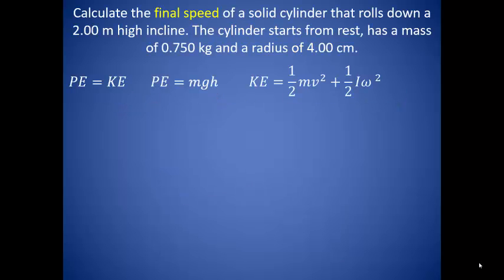So let's calculate the final speed of a solid cylinder that rolls down a 2 meter high incline. The cylinder starts from rest, has a mass of 0.750 kilograms and a radius of 4 centimeters. So here is what we know. Potential energy is equal to the total final kinetic energy. We also know how to find gravitational potential energy. And the total kinetic energy is the rotational and linear kinetic energies added together. So these two expressions are equal to each other.